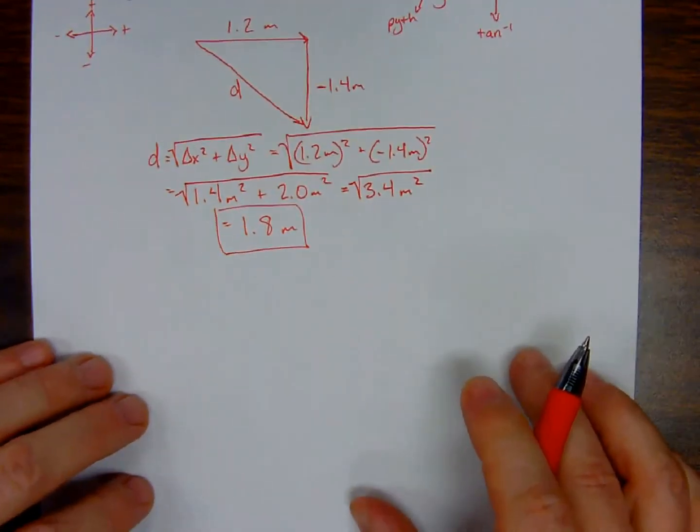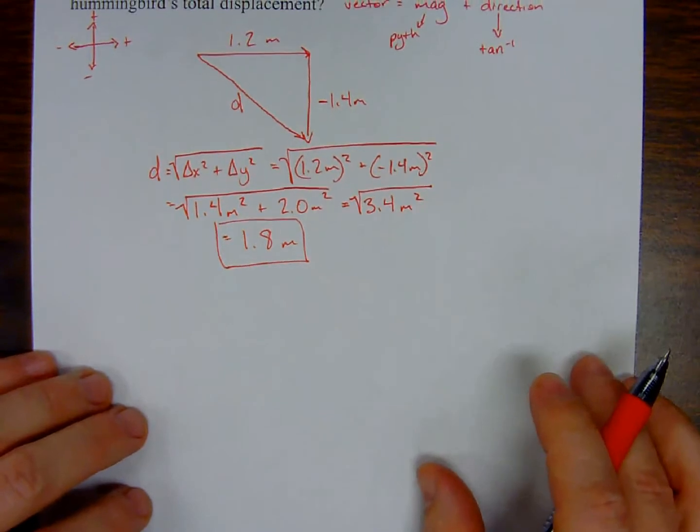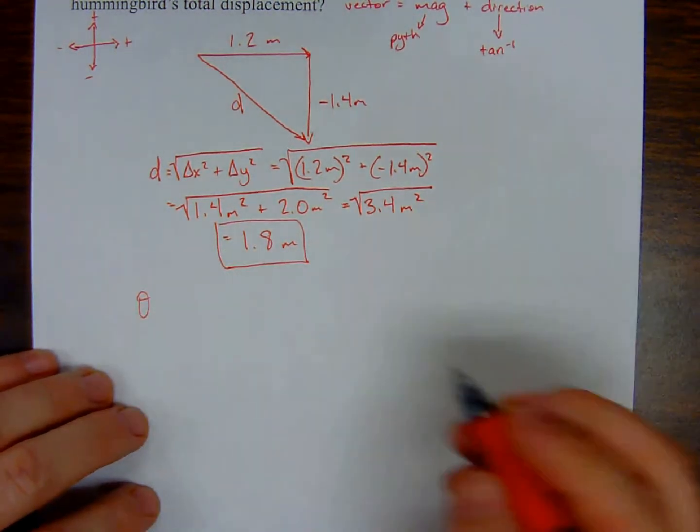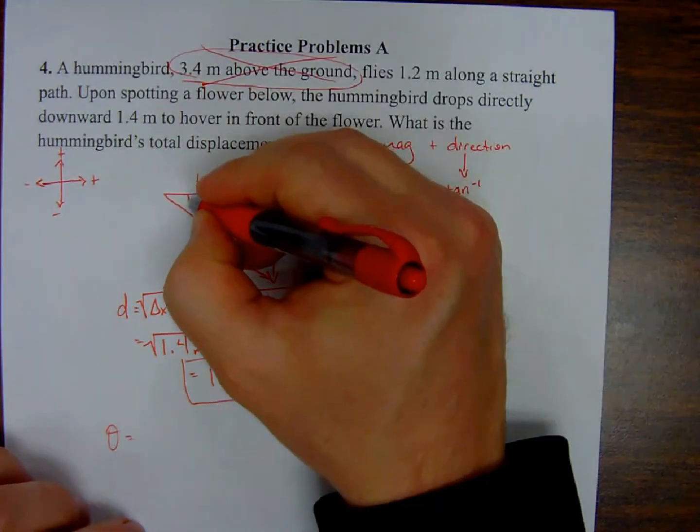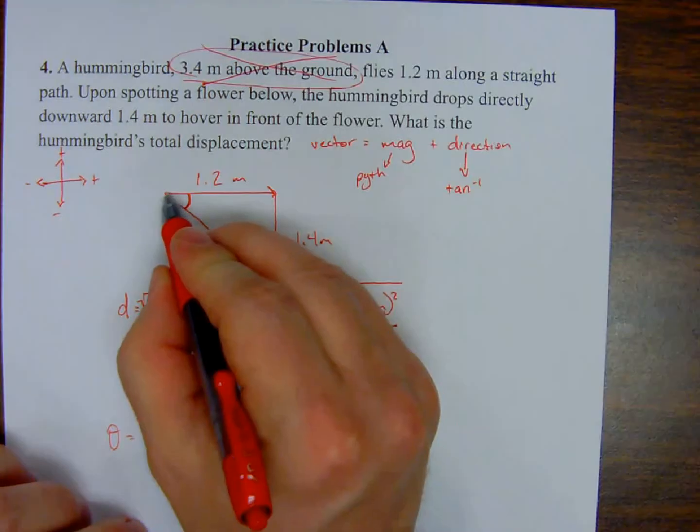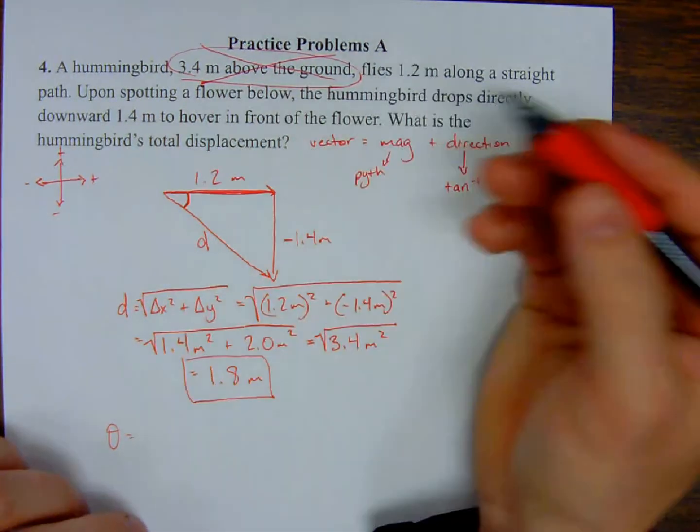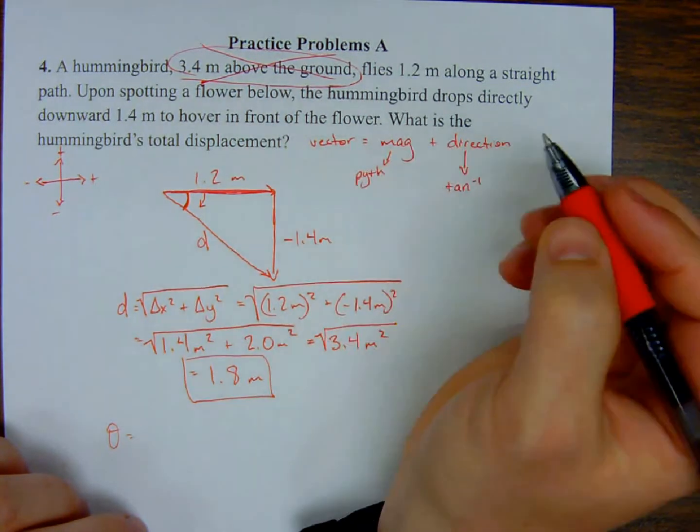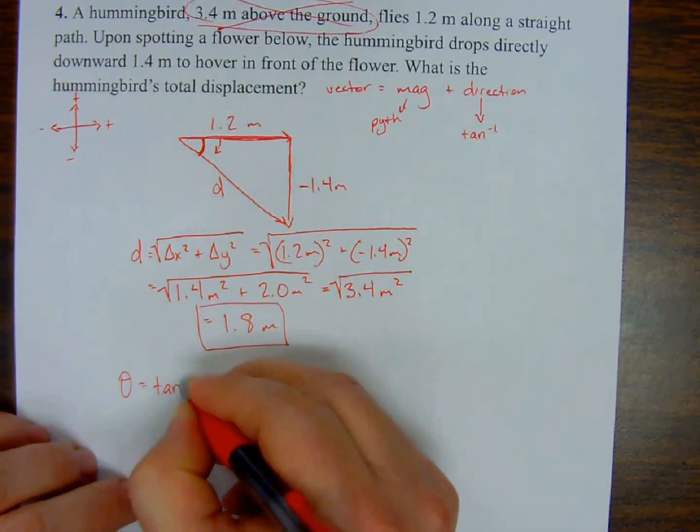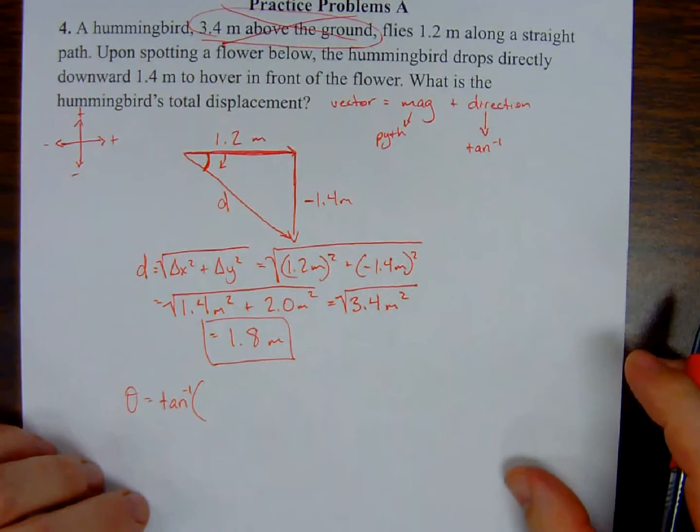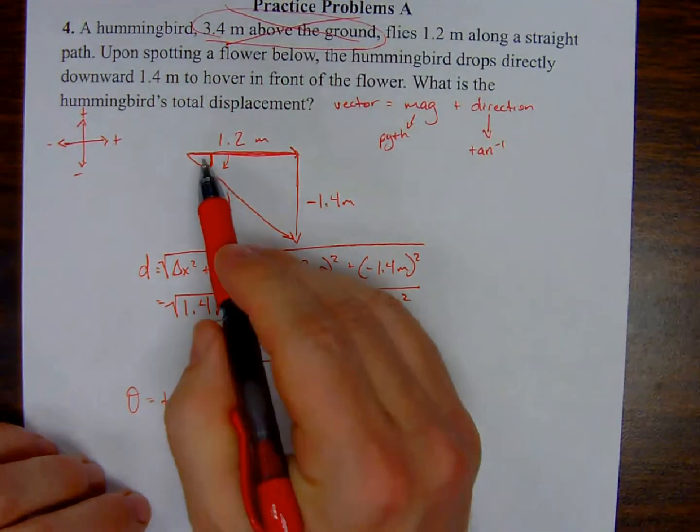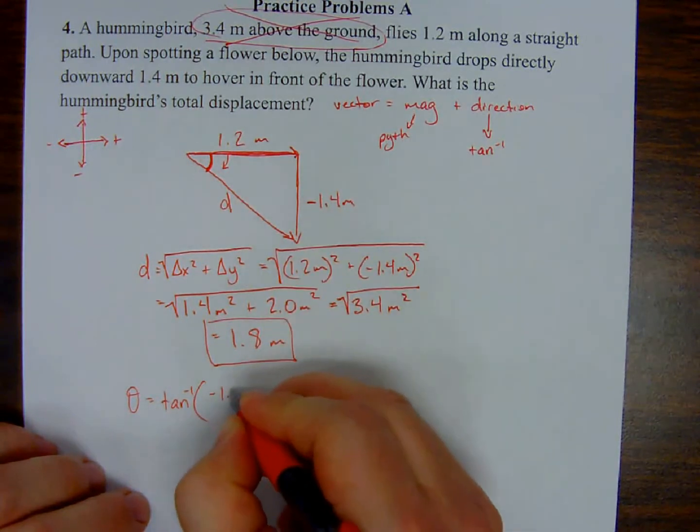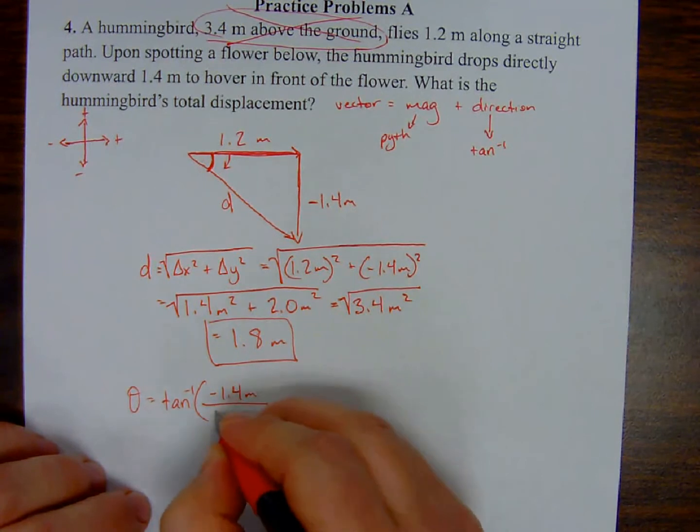Now let's find that direction. That angle of displacement is going to be this angle right here, because this x direction was the original first movement, and then the second movement was down. We're moving this way from that original direction, so this is our angle. That's important because we're using the inverse tangent function. You remember from trigonometry that tangent is opposite over adjacent from this angle. That tells me to put in the negative 1.4 meters and the 1.2 meters appropriately. And again, two significant figures - I end up with negative 49 degrees.